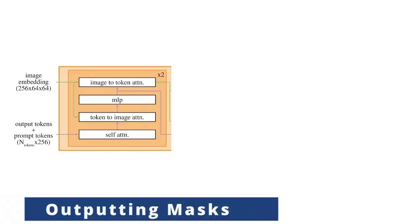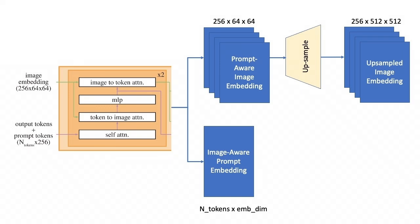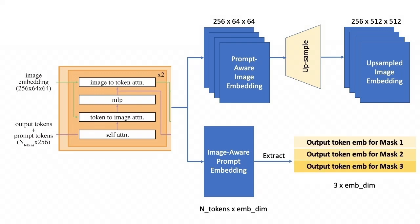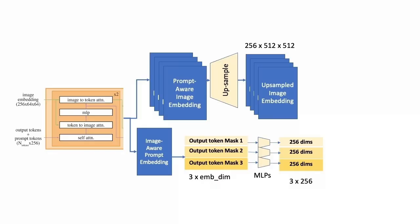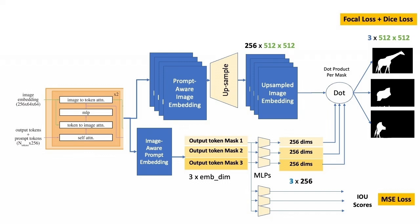So after the two layers of all sorts of attention grabbing is done we arrive at a context-aware image embedding and a context-aware prompt embedding. The image embedding is then upsampled from a 64 by 64 feature space to a 512 by 512 feature space with 256 channels. From the final prompt embedding we extract the embeddings for each mask from the indices corresponding to the three output tokens we had placed in the input. These three output embeddings are passed through an MLP layer to map each of them to 256 dimensions the same as the number of channels in the final image embedding. Finally we take a channel-wise product between the image and each of these three prompt outputs and output the three final masks. We also train a separate MLP layer for output tokens to predict the IOU score for each predicted mask. The masks are trained as discussed earlier with the combination of focal and dice loss with respect to the best mask of the three while the IOU output is trained with the mean square error loss.